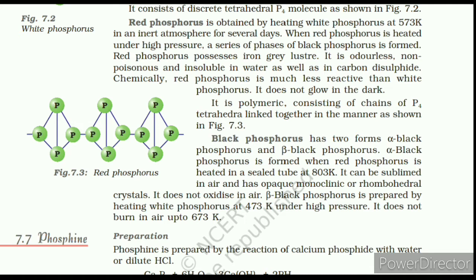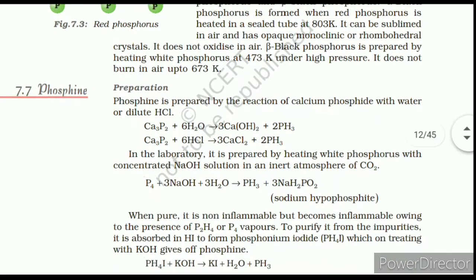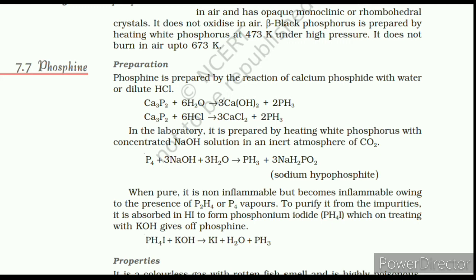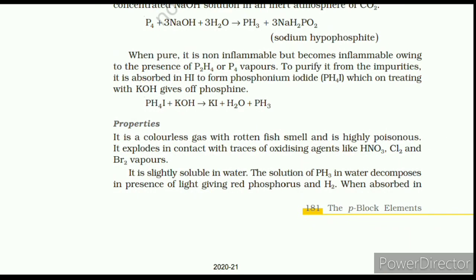7.7 Phosphine. Preparation: Phosphine is prepared by the reaction of calcium phosphide with water or dilute HCl. In the laboratory it is prepared by heating white phosphorus with concentrated NaOH solution in an inert atmosphere of CO₂. When pure it is non-inflammable, but becomes inflammable owing to the presence of P₂H₄ or P₄ vapors. To purify it from impurities, it is absorbed in HI to form phosphonium iodide PH₄I, which on treating with KOH gives pure phosphine. Properties: It is a colorless gas with a rotten fish smell and is highly poisonous. It explodes on contact with traces of oxidizing agents like HNO₃, Cl₂, and Br₂ vapors, and is slightly soluble in water.